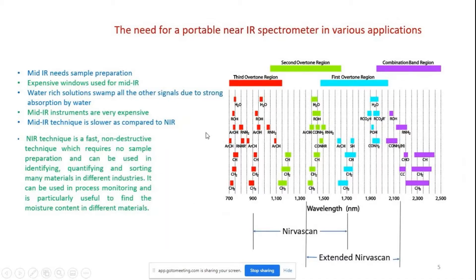Some limitations of mid IR include the need for expensive windows and sample preparation, inability to measure water solutions, high instrument cost, and slow speed. Near IR, by contrast, is a fast non-destructive technique that can measure signals without any sample preparation.